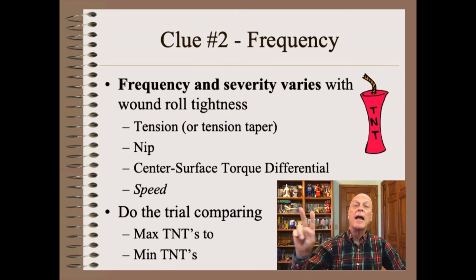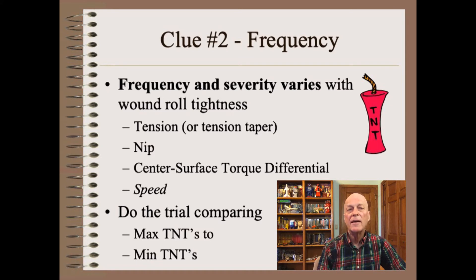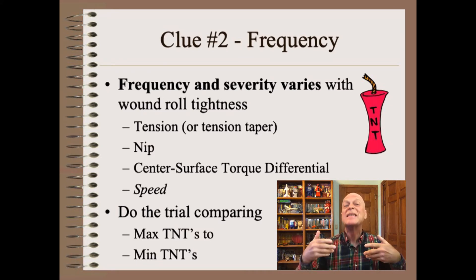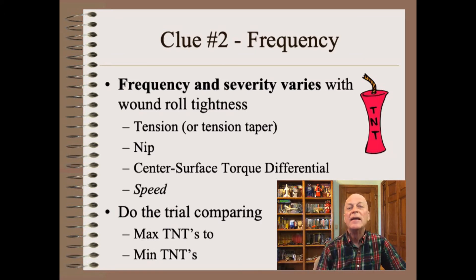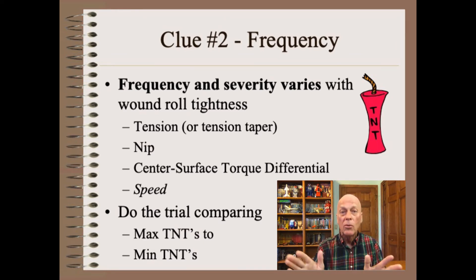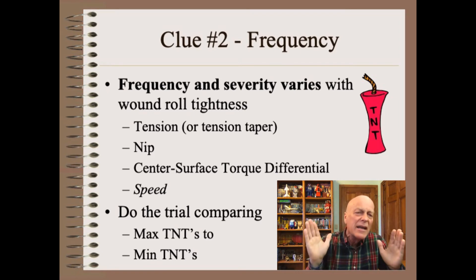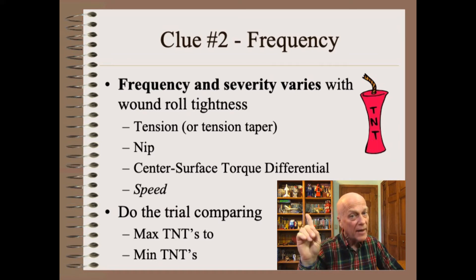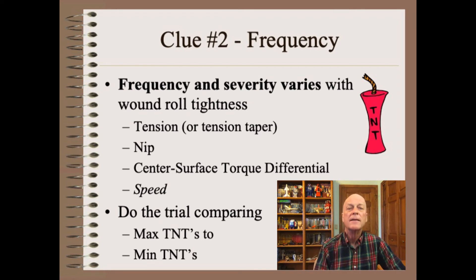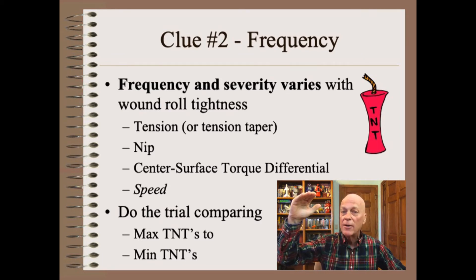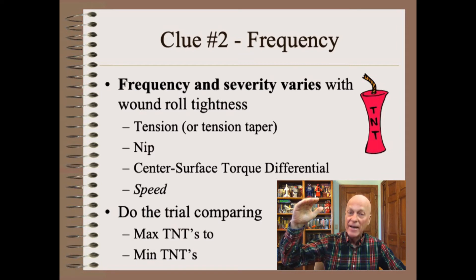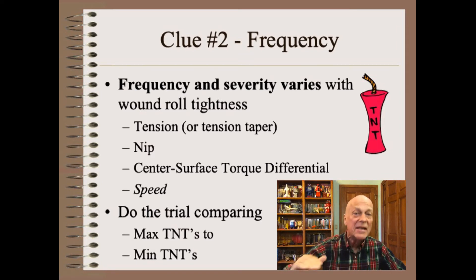The second effective clue for a winding defect is that the frequency of a specific defect is sensitive to large enough changes in the TNTs, or in short, long roll tightness. Note, we do not use frequency dependence of different products — that is expected and of only secondary interest for troubleshooters. Instead, we look at tightness dependence for one specific defect on one specific product. The trial is easy: simply slam all of the tightness knobs in one direction and compare it with the frequency of that defect when all the knobs are slammed into the other direction.